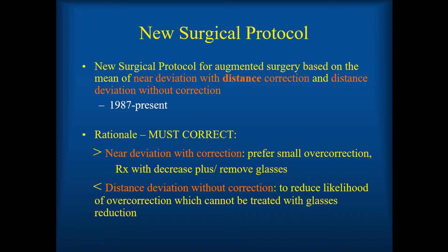You have to correct at least the near deviation with correction, which is the largest deviation with the glasses on — usually most patients have a smaller distance and a larger near deviation. You prefer a small overcorrection of that deviation because you can reduce the plus to treat that; if you undercorrect, you can't do anything but reoperate. But you can't treat more than the distance deviation without correction, because if you remove the glasses completely you would still have an overcorrection. So you need to treat somewhere in between — I selected the average of those two numbers: near with correction and distance without correction.